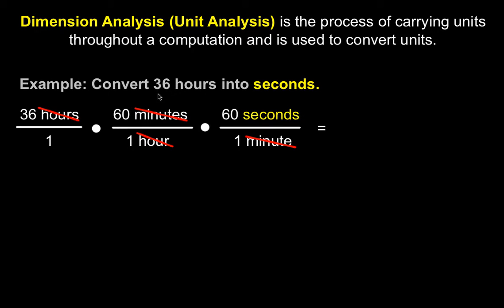So the equivalent of 36 hours in seconds is basically 36 times 60 times 60, and that would be 129,600 seconds.